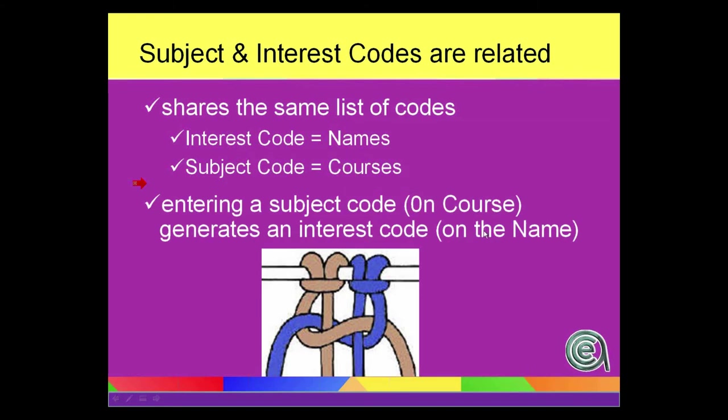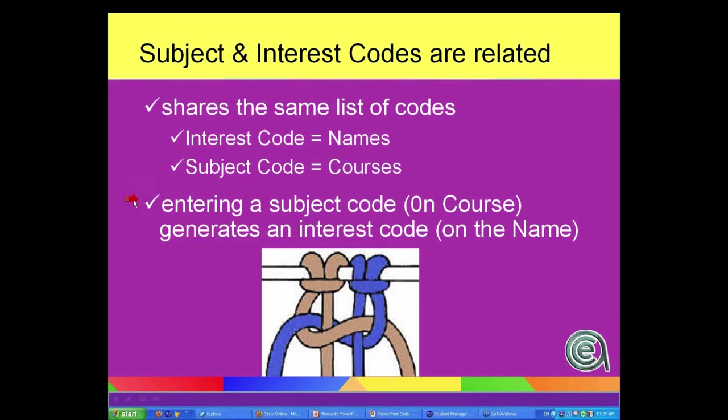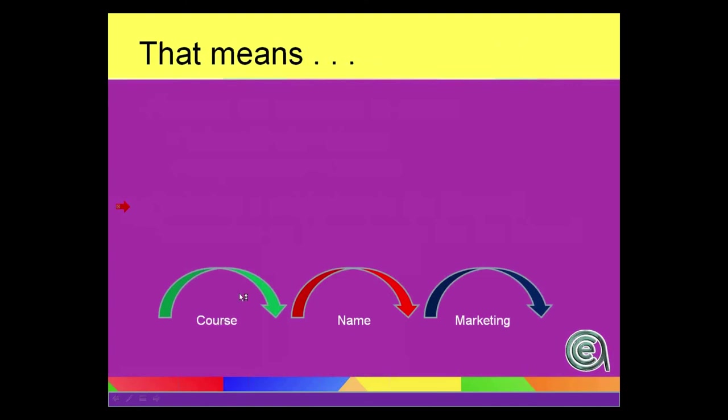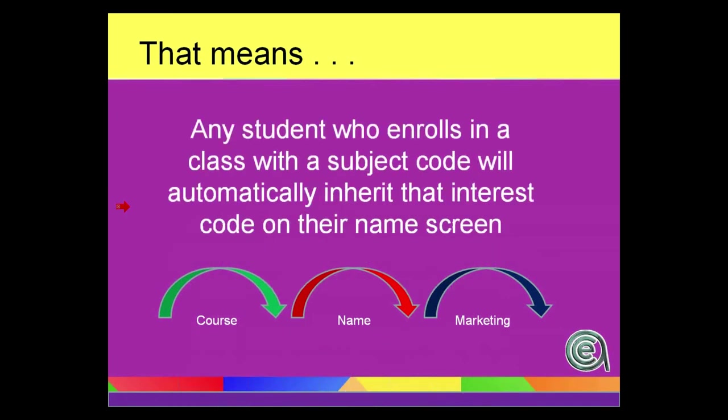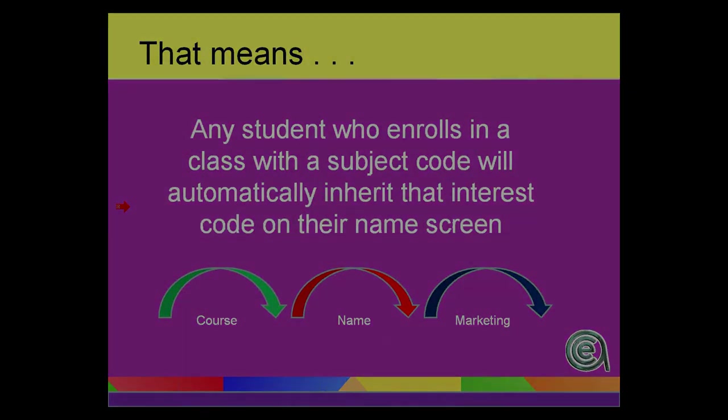And that allows you to cross-pollinate the names and be able to build target lists of people who would be prospects for classes in that particular subject area. So feed the course, the course feeds the name, and that will feed all your marketing down the road and statistical reporting. That is the big deal why we really, really encourage you to put a subject code on a course.